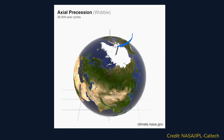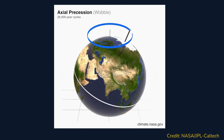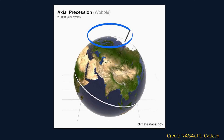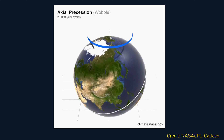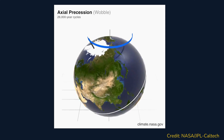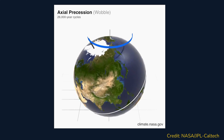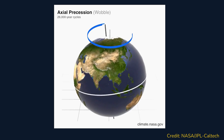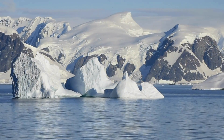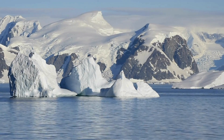Our planet's tilt isn't set in stone — it actually wobbles very slowly, like a spinning top losing its momentum. This wobble is called axial precession, and it causes the tilt to change over time between about 22 degrees and 24 and a half degrees on a 26,000-year cycle. This wobble is really slow, so it doesn't have a noticeable impact on our climate within our own lifetimes, but over thousands of years these changes in tilt can contribute to shifts in the Earth's climate and may play a role in the onset and retreat of ice ages.